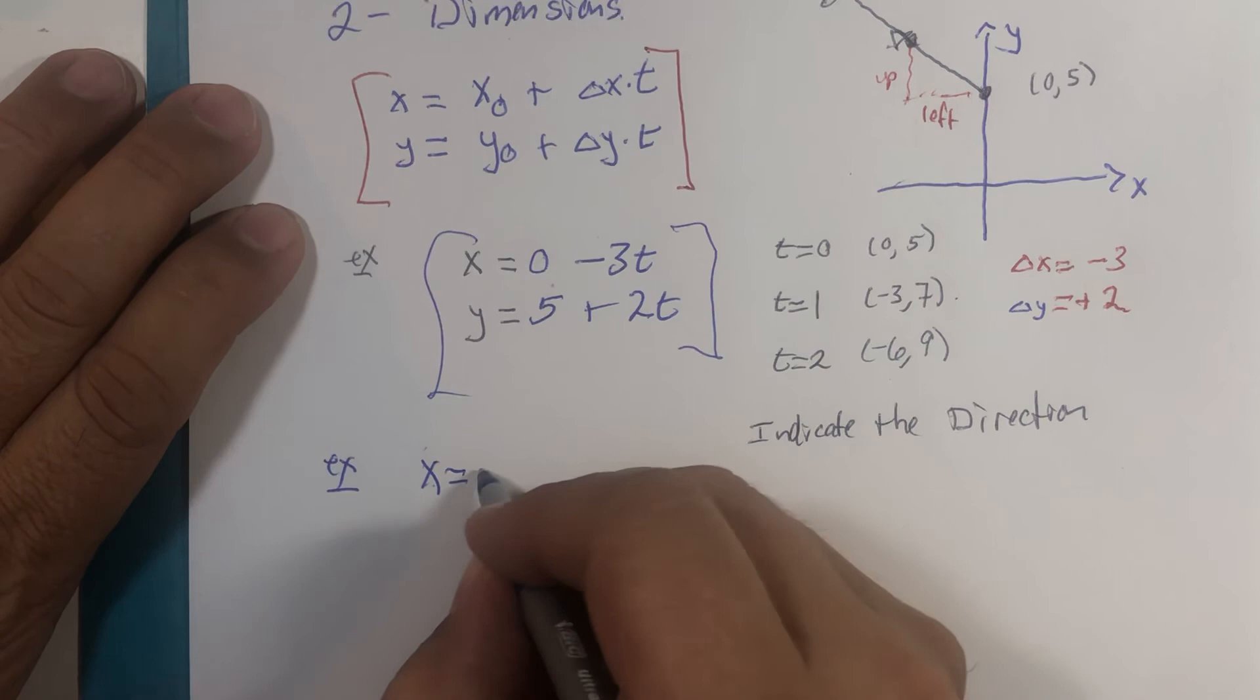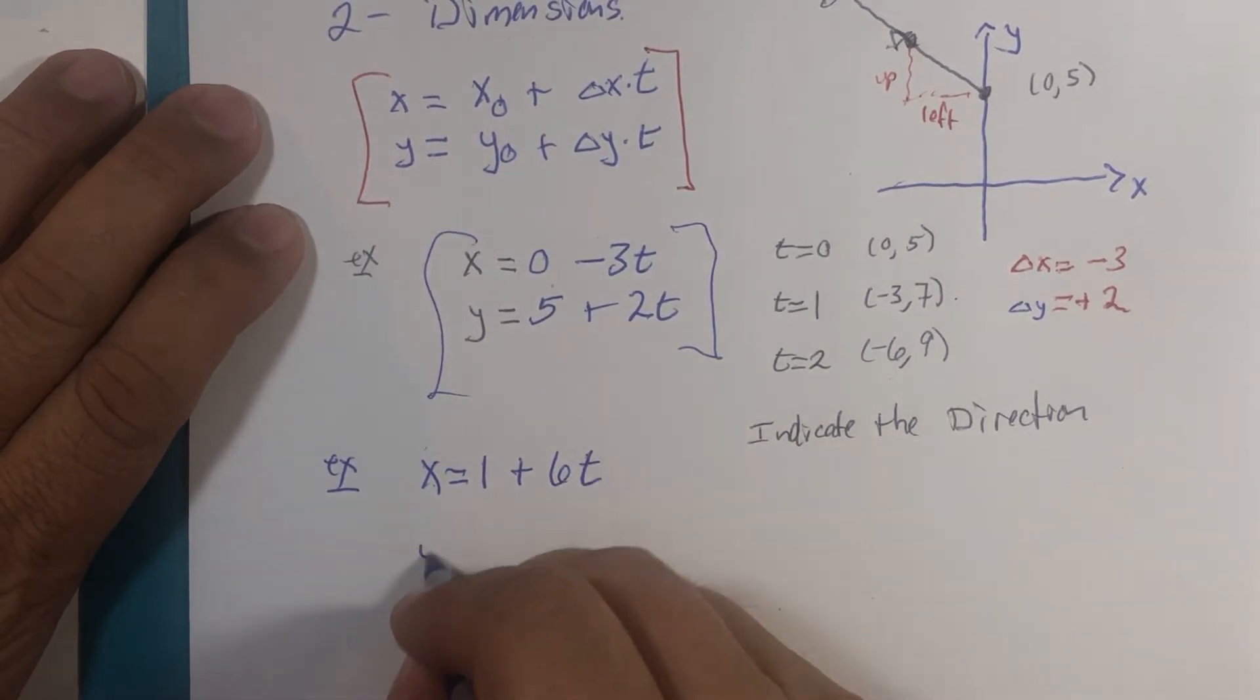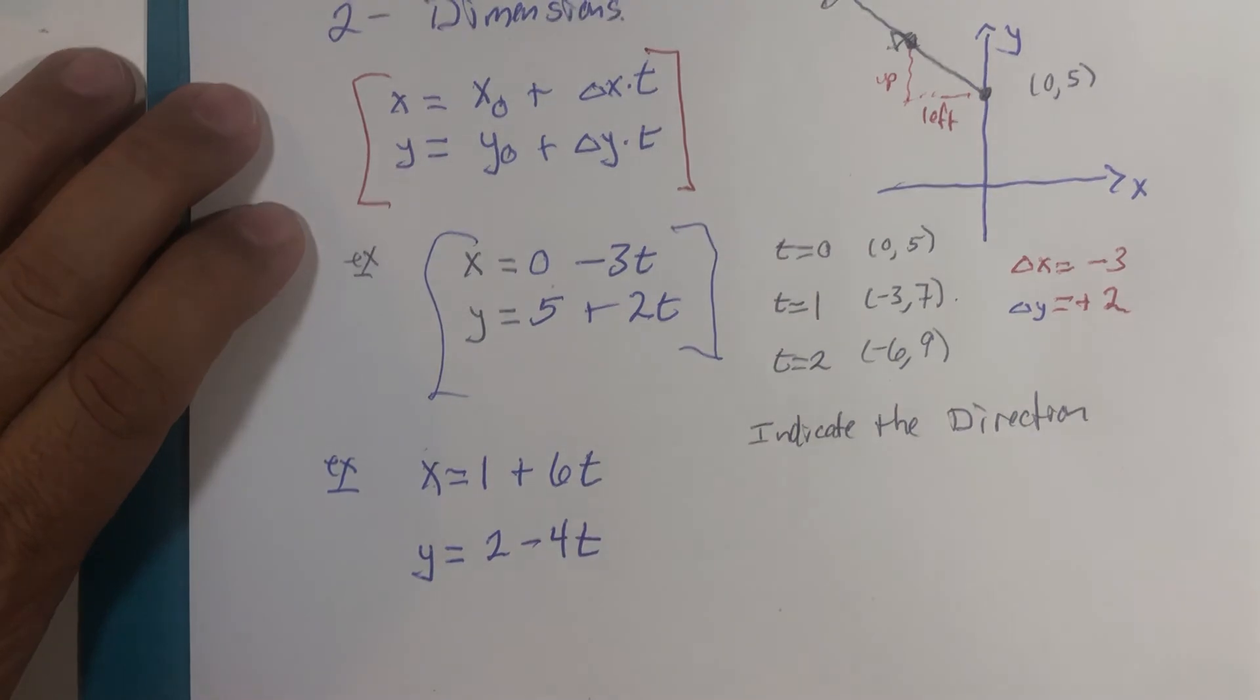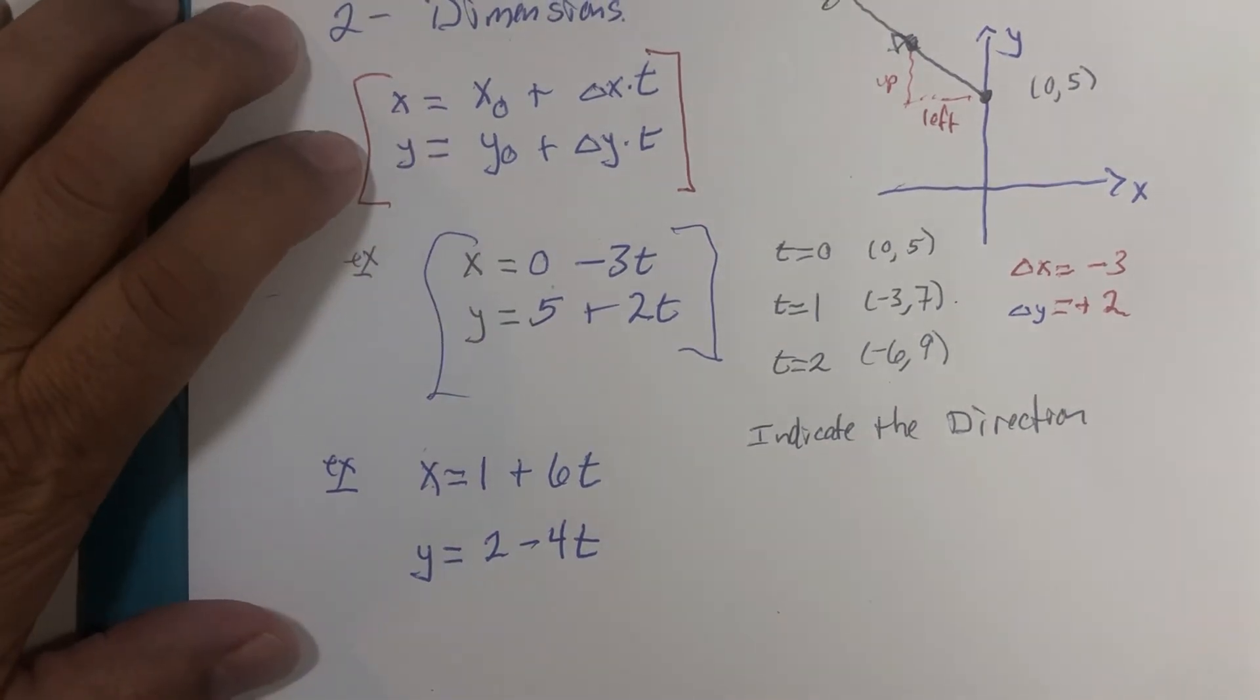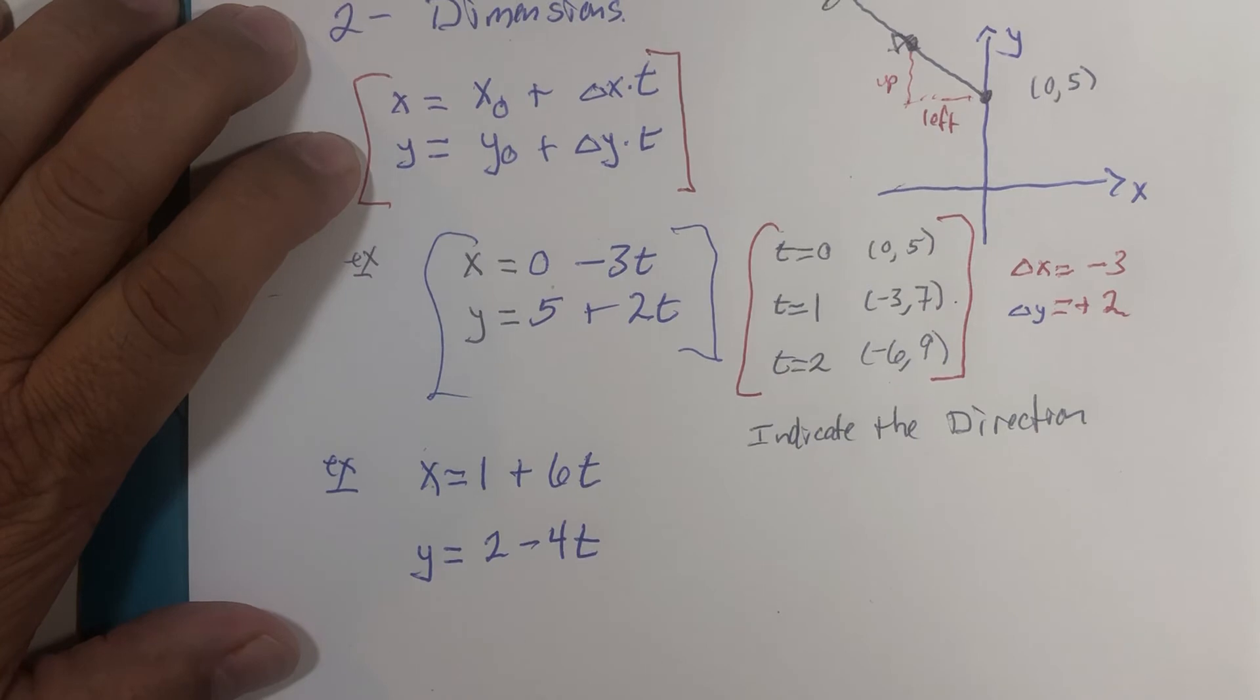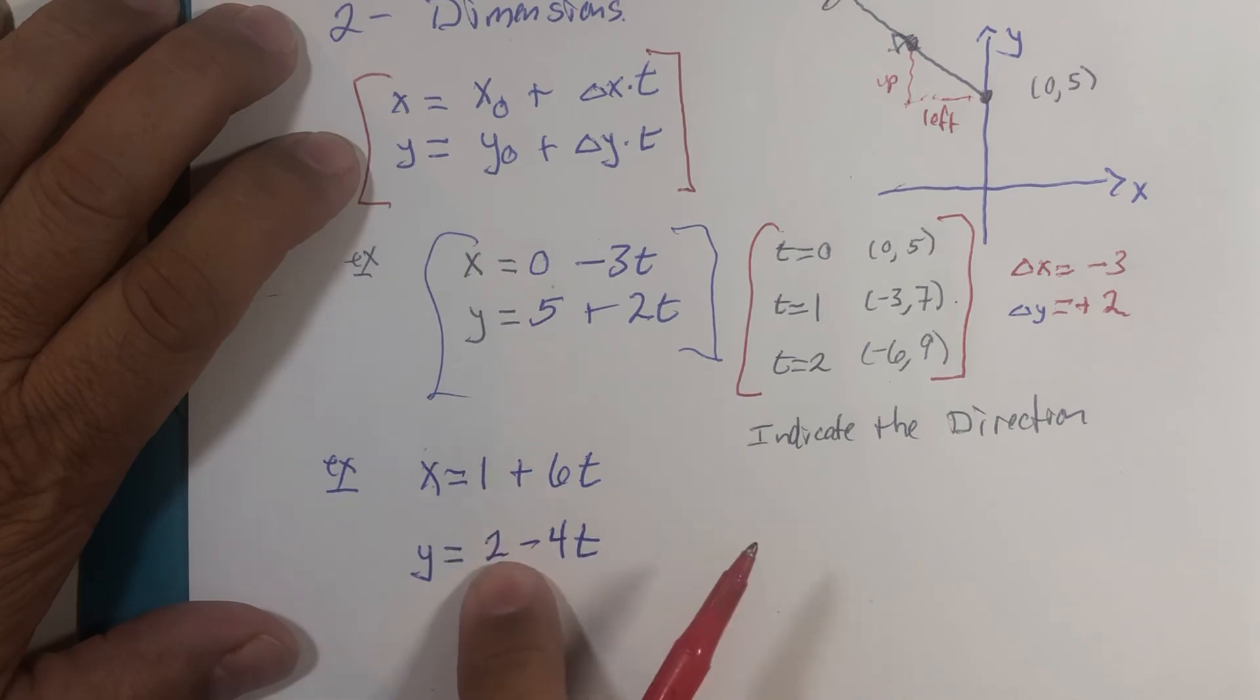x equals 1 plus 6t, y equals 2 minus 4t. If we wanted to look at the graph of that line, you could do it a whole bunch of different ways. You could start by plotting points, what I love to call going pre-algebra on a problem. Let's plot points, connect the dots and say well that's weird. Or you could be a little bit more clever and say let's begin at the point (1, 2), right here on our graph.